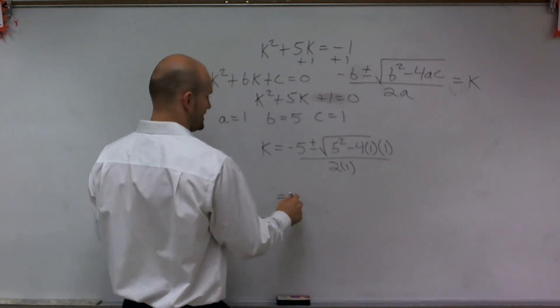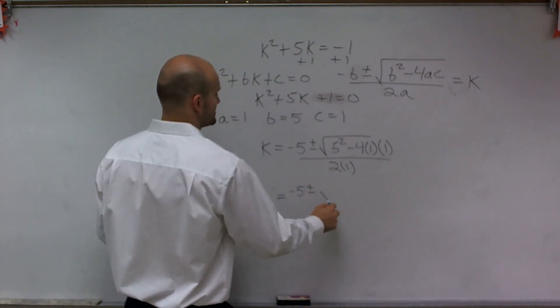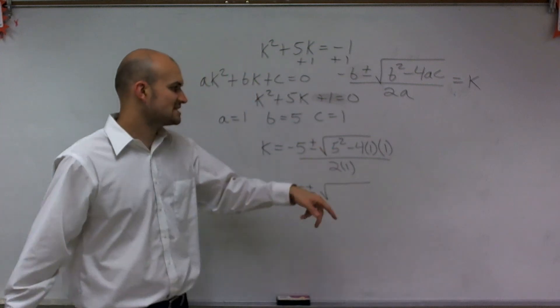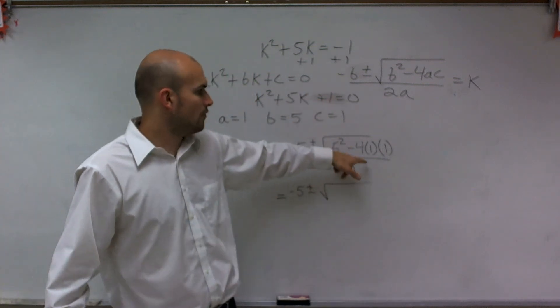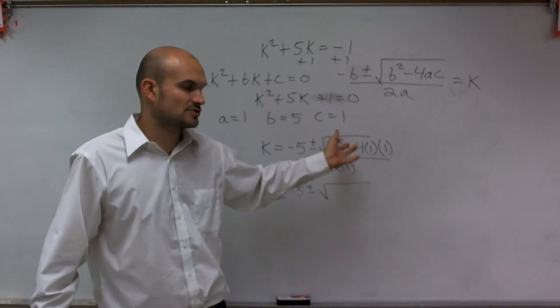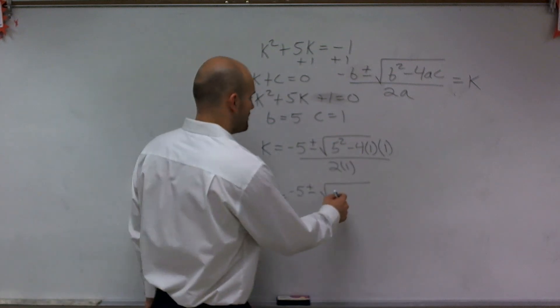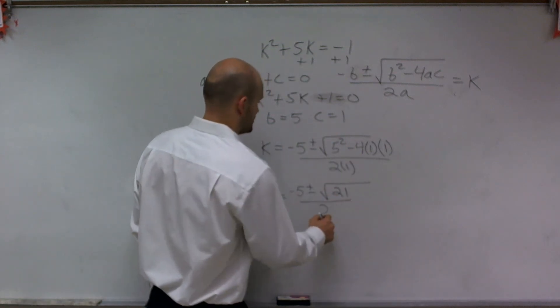So therefore, that equals k equals negative 5 plus or minus the square root. Let's see if we can simplify this. So I have 5 squared, which is 25, 4 times 1 times 1, which is 4. So 25 minus 4 is 21, all divided by 2.